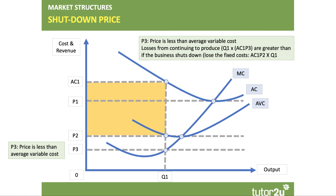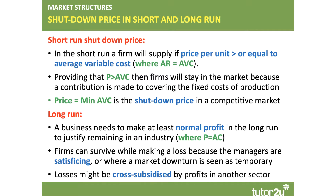Let's go through this again: if they carry on producing, that's the loss. If they shut down production, the loss will be lower — they lose the fixed costs. In this situation, the firm would shut down production. The bottom line is that they need a price of at least P2 to justify continuing in the market in the short term. You've got to cover your variable costs.